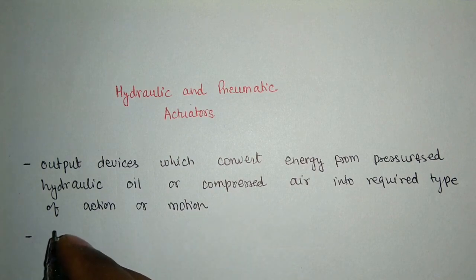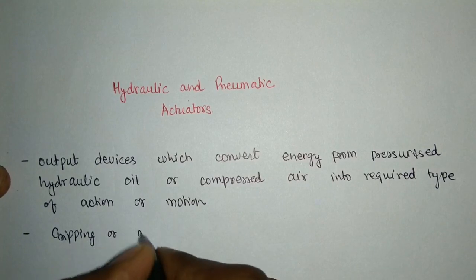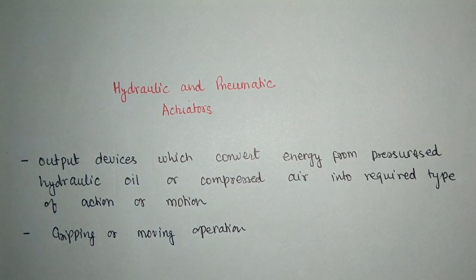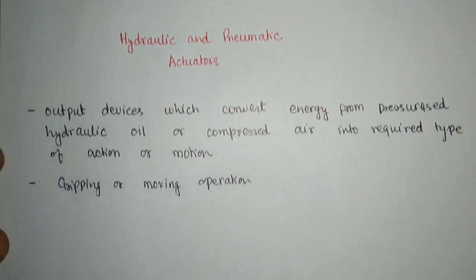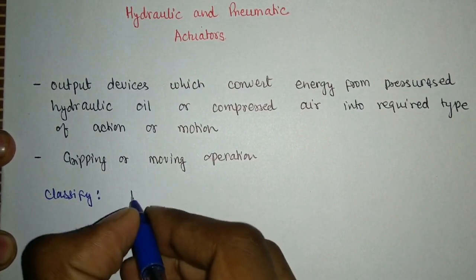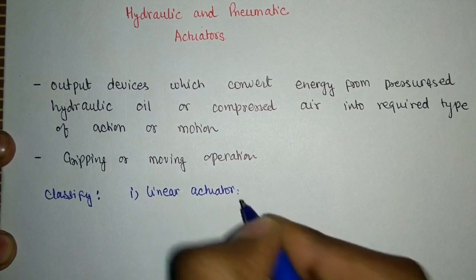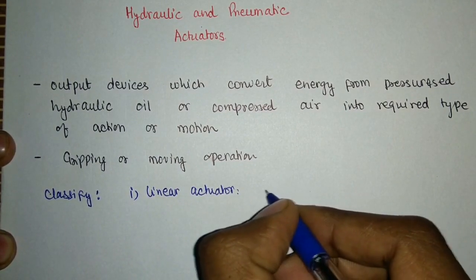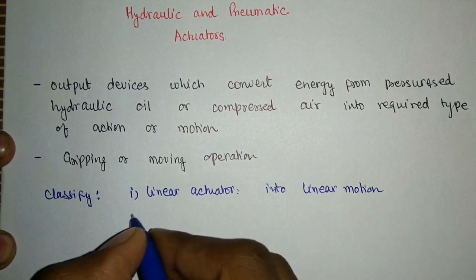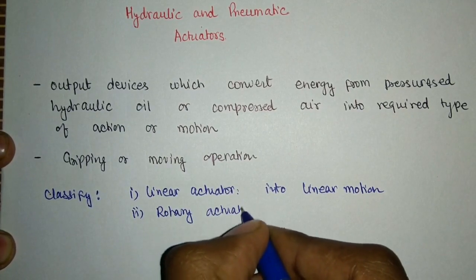Actuators are basically used in gripping operations - either we want to grip something or move something from one place to another. Based upon that movement or other applications, we can classify actuators into certain categories. The first classification is a linear actuator, where the conversion of energy results in linear motion as the output. The second classification is a rotary actuator, where the output is rotary motion.